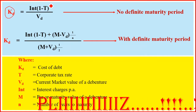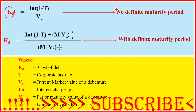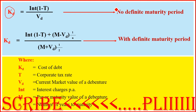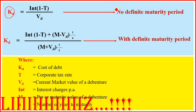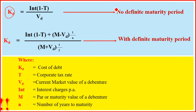The cost of debt Kd, when there is no definite maturity period, is given by: Kd = Interest × (1 − T) / Vd. A company borrows from the general public using debentures — issuing a debenture certificate in exchange for funds, then paying interest for a given duration before returning the principal at the end of the period.